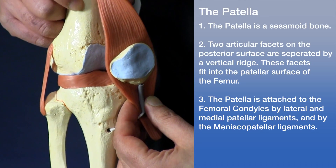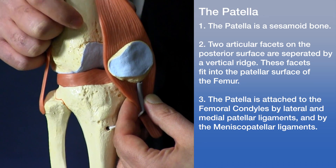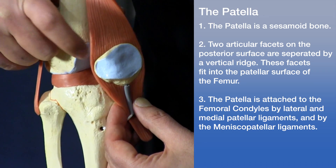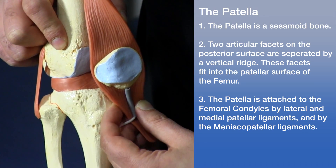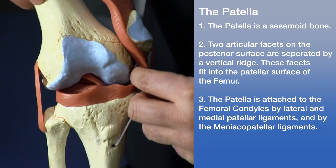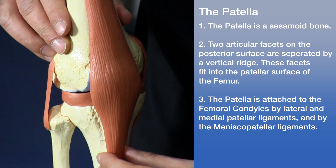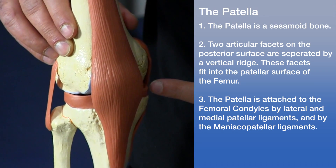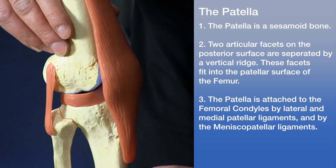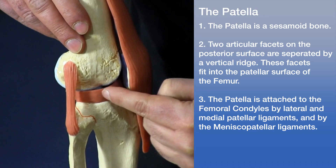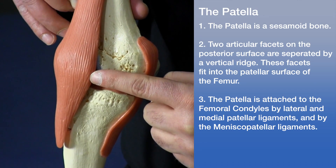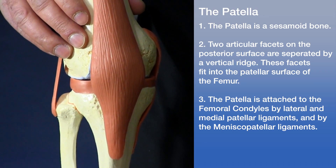The patella is a sesamoid bone. There are two articular facets on the posterior surface of the patella, separated by a vertical ridge in the middle. The posterior surface of the patella articulates with the patellar surface of the femur. The patella is attached to the meniscus — the lateral meniscus on one side and the medial meniscus on the other — via the meniscal patellar ligaments. The ligament runs from the lateral meniscus up into the patella, and from the medial meniscus up into the patella. Even though it is attached, the patella remains quite mobile.